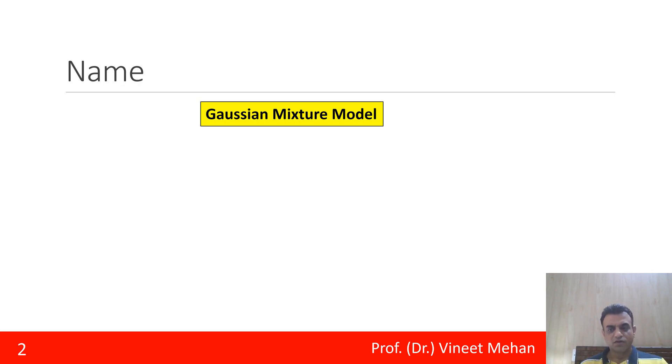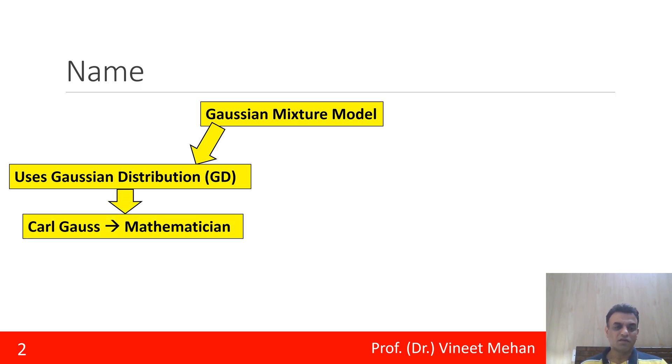So for this we'll be splitting the entire name into three parts: first is the Gaussian, second is the mixture, and third is the model. We call it as Gaussian because it uses Gaussian Distribution. The word Gaussian came from the name of a mathematician, Carl Gauss.